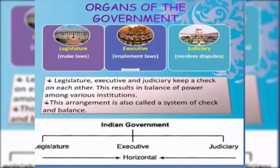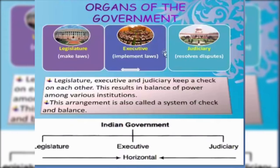The first form is power sharing among the different organs of the government. The organs of the government are the legislature — that means the parliament, Vidhan Sabha, Vidhan Parishat — which makes the laws. Another organ is the executive, which implements the laws; executive means the IAS and IPS officers. The third organ is the judiciary, which resolves disputes.